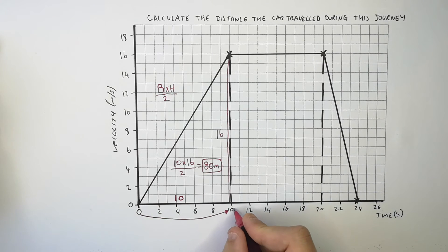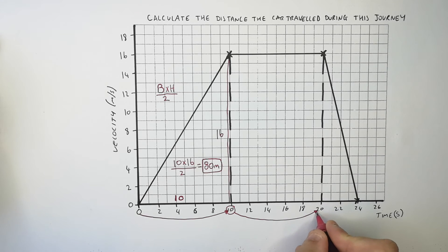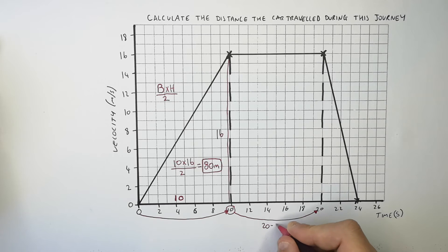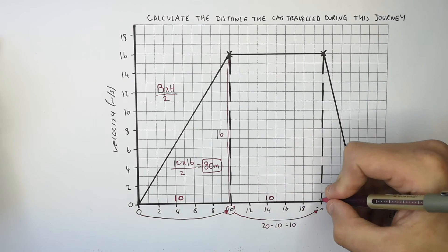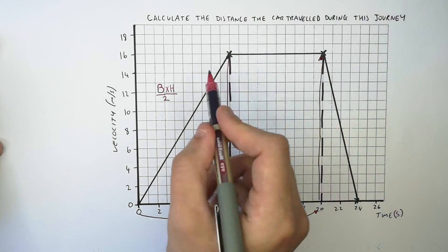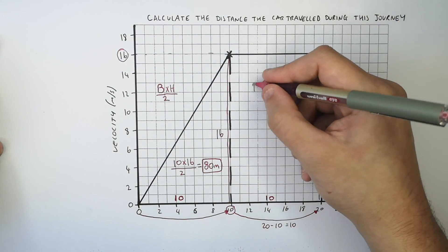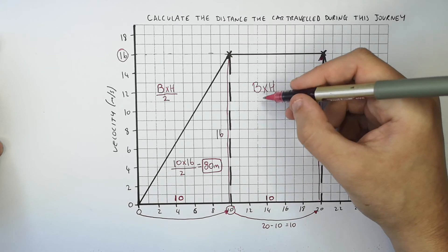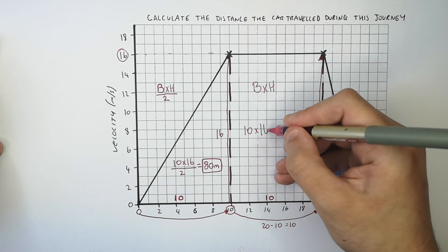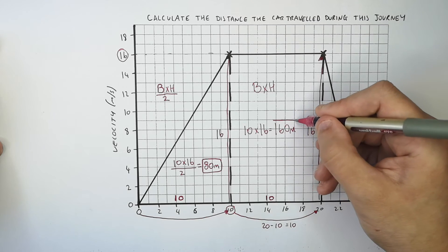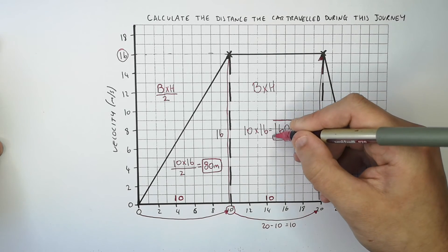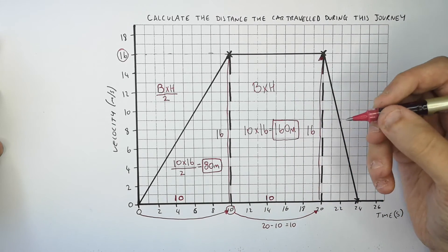Now, because it's a square or a rectangle, you use the equation base times height to work out the area. The base is going to be 20 minus 10, giving you a base of 10, and you have a height of 16 metres per second. So that means you use base times height — 10 times 16 — giving you a distance of 160 metres. The car travelled 160 metres while at a constant velocity of 16 metres per second.